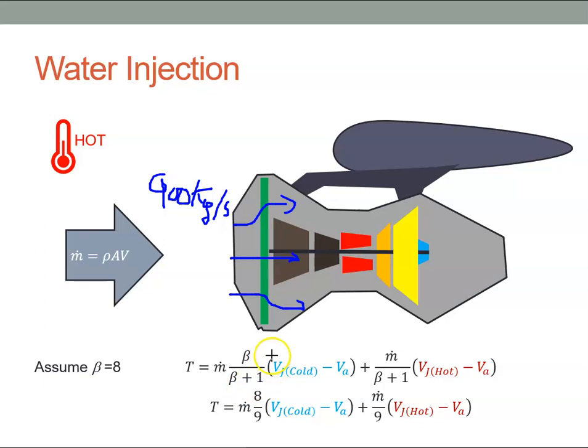Now on a warm day, the mass flow of air is dependent upon the density, the cross-sectional area of the intake, and the velocity of the aircraft.